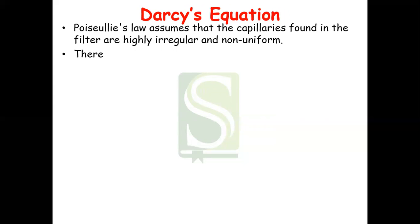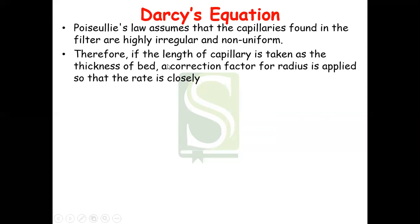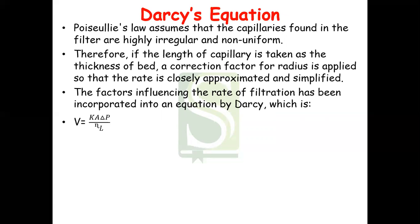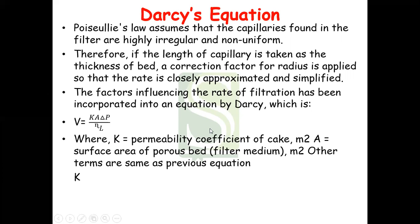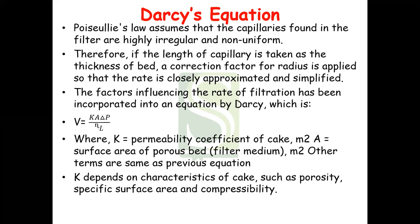The next equation is given by Darcy's equation. Poiseuille's law assumed that the capillaries found in the filter are highly irregular and non-uniform. Therefore, if the length of the capillaries is taken as the thickness of the bed, a correction factor for radius is applied so that the rate is closely approximated and simplified. The factors influencing the rate of filtration have been incorporated into an equation by Darcy, which is: V equals K times A times delta P divided by viscosity and length. K is the permeability coefficient, A is the surface area of the porous bed, and other terms are as previously defined. K depends on the characteristics of the cake, such as porosity, specific surface area, and compressibility.